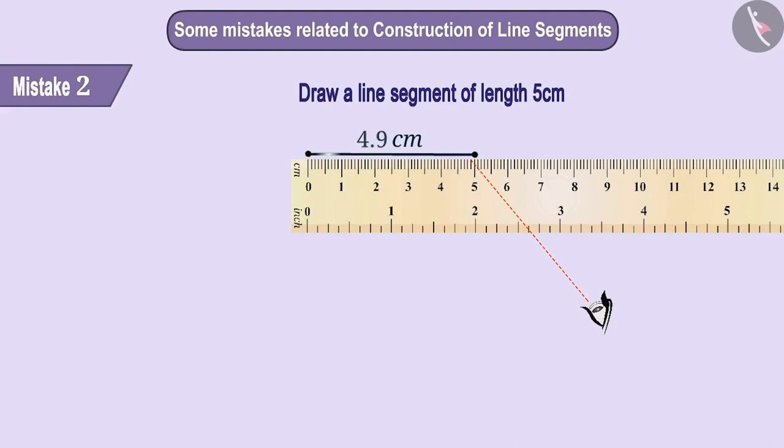Jai once again tried to draw a line segment of length 5 cm. This time while drawing the line segment, Jai was looking at the sign from the left.